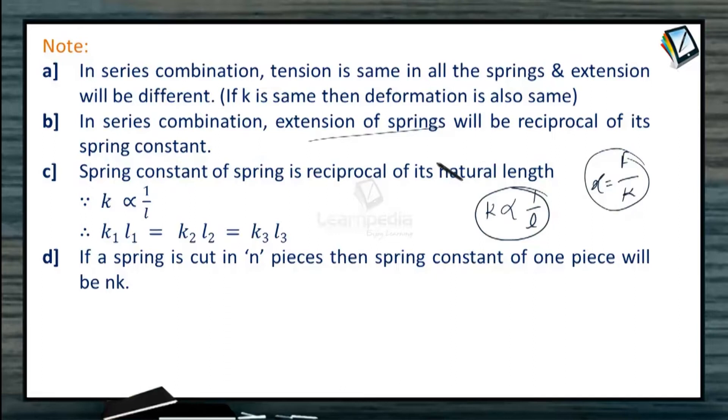This is one of the important points that you can use. If suppose we have one single spring and if we divide this spring into equal halves, L by 2, L by 2. This is L, this is L by 2, L by 2. Then these two halves must be such that if we connect them in series,